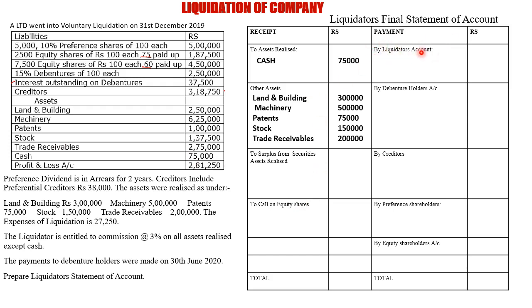The very first item on the payment side is the liquidator's account. In this, we only have two expenses: one is the liquidation expense and the other is the liquidator's commission or remuneration. From the adjustment, the expenses of liquidation are 27,250, so we note down liquidation expense: 27,250.